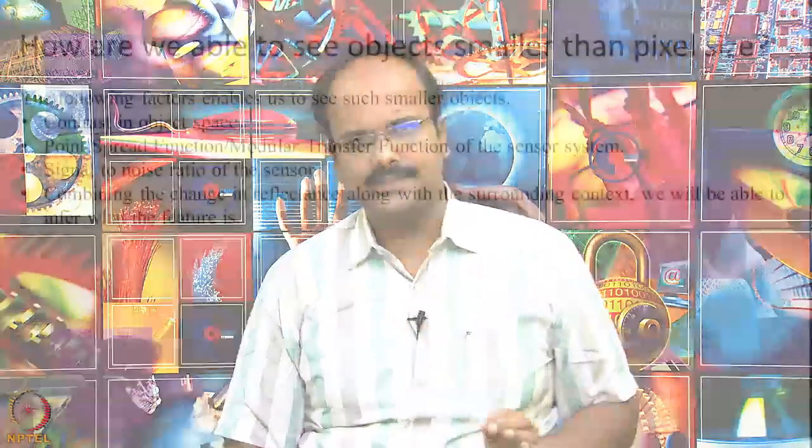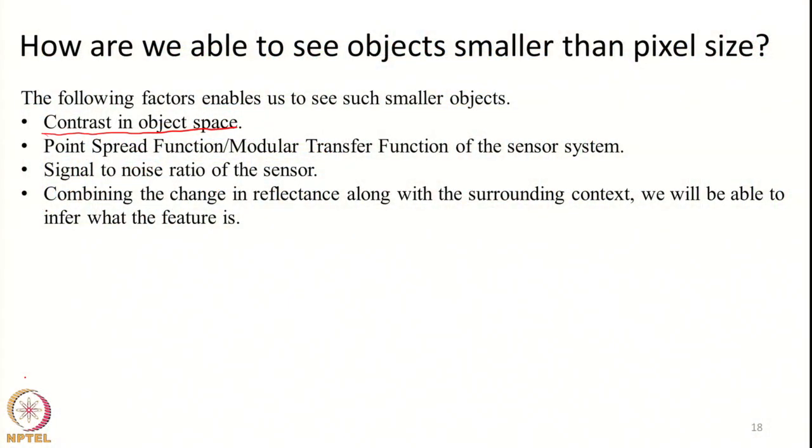The next important concept which helps us identify smaller objects at coarser pixel sizes is what is known as the Point Spread Function (PSF) or the Modulation Transfer Function (MTF). These two are related concepts. Essentially, the Point Spread Function relates to a lens — when energy from a point source passes through a lens, it should theoretically be imaged as a single point.